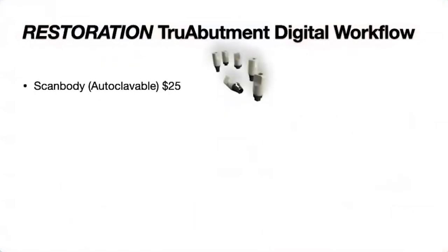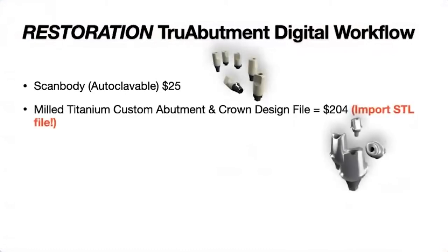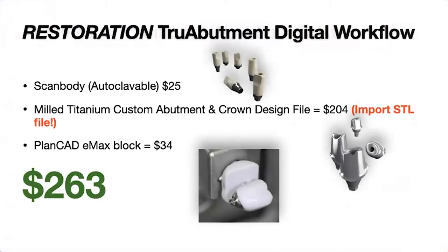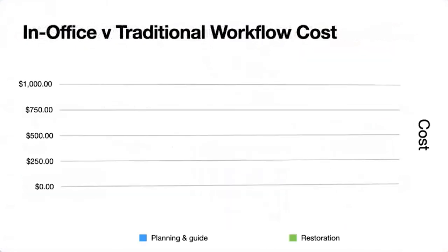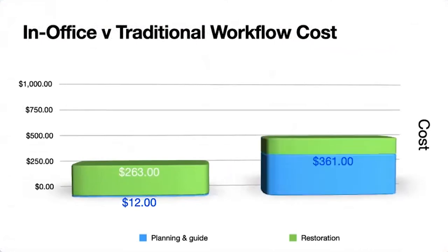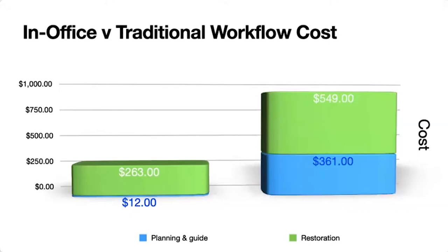The restoration with True Abutment digital workflow: the scan body costs $25 and is autoclavable. The milled titanium custom abutment and crown design file is $204. The Emacs block I use is about $34, for a total cost of $263.